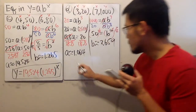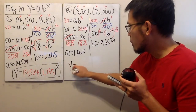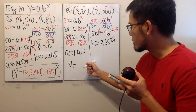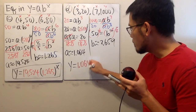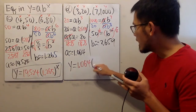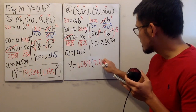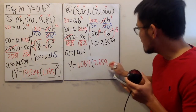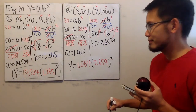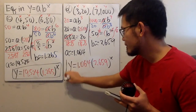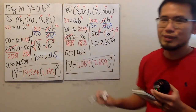Finally, we write y equals 1.064 times 2.659 raised to the x power. And yes, we're done.